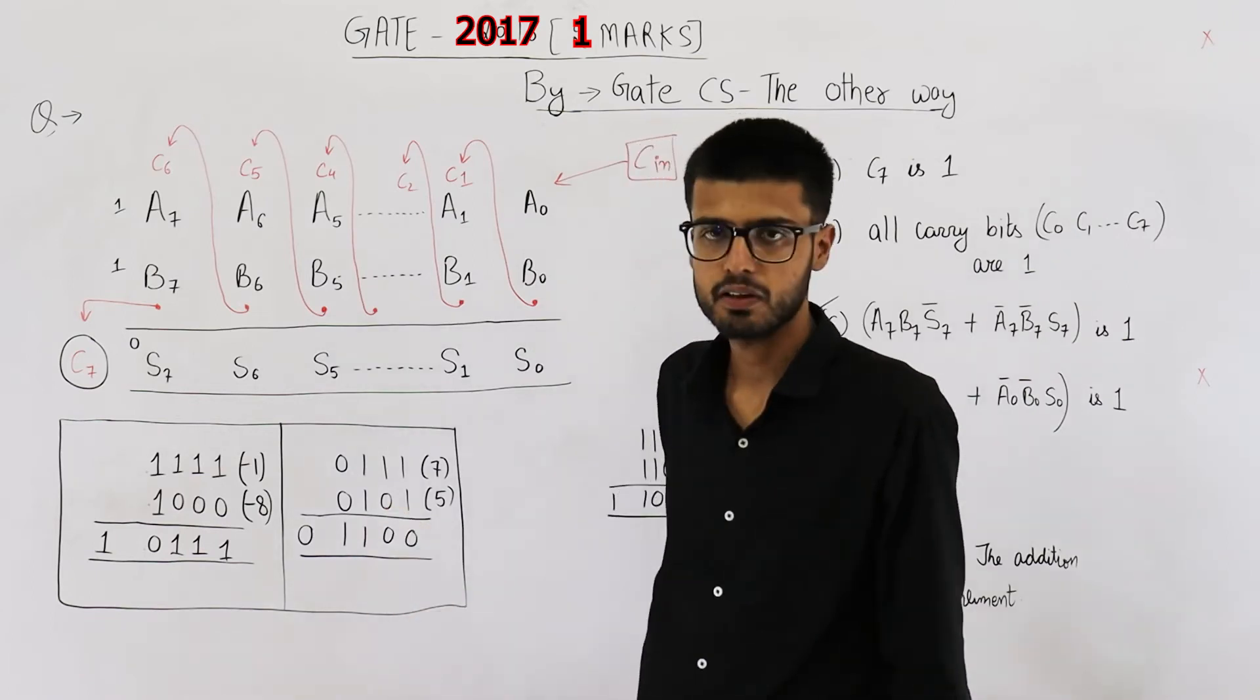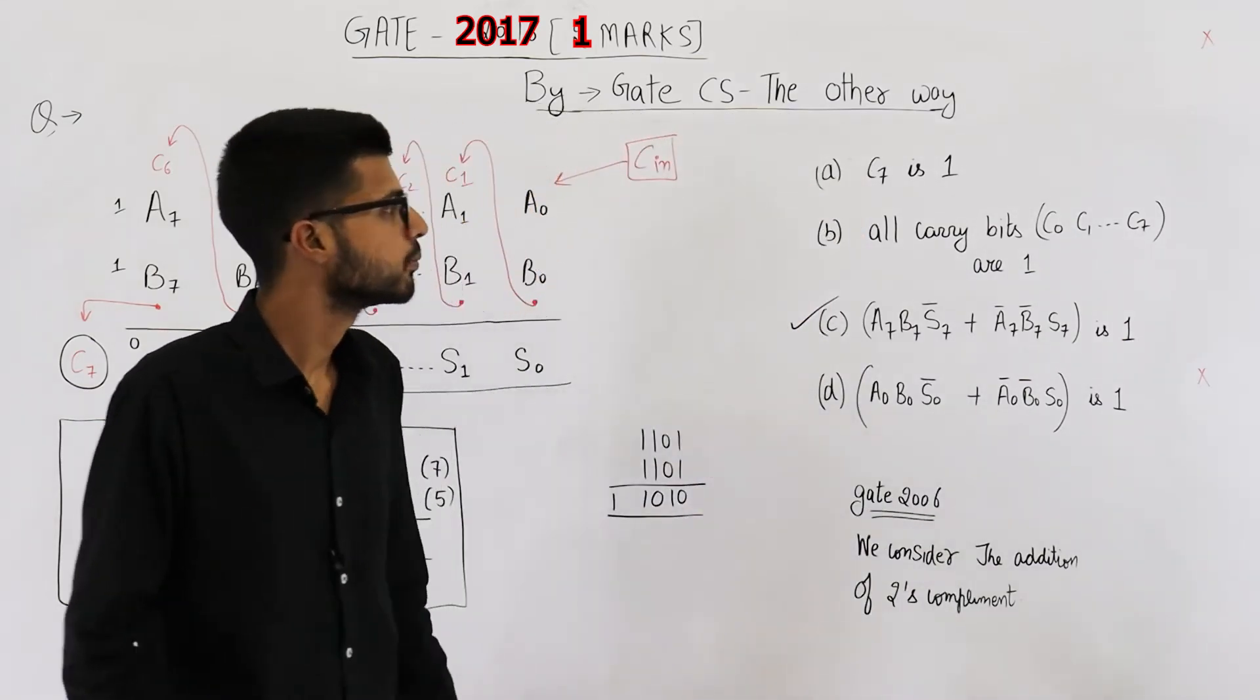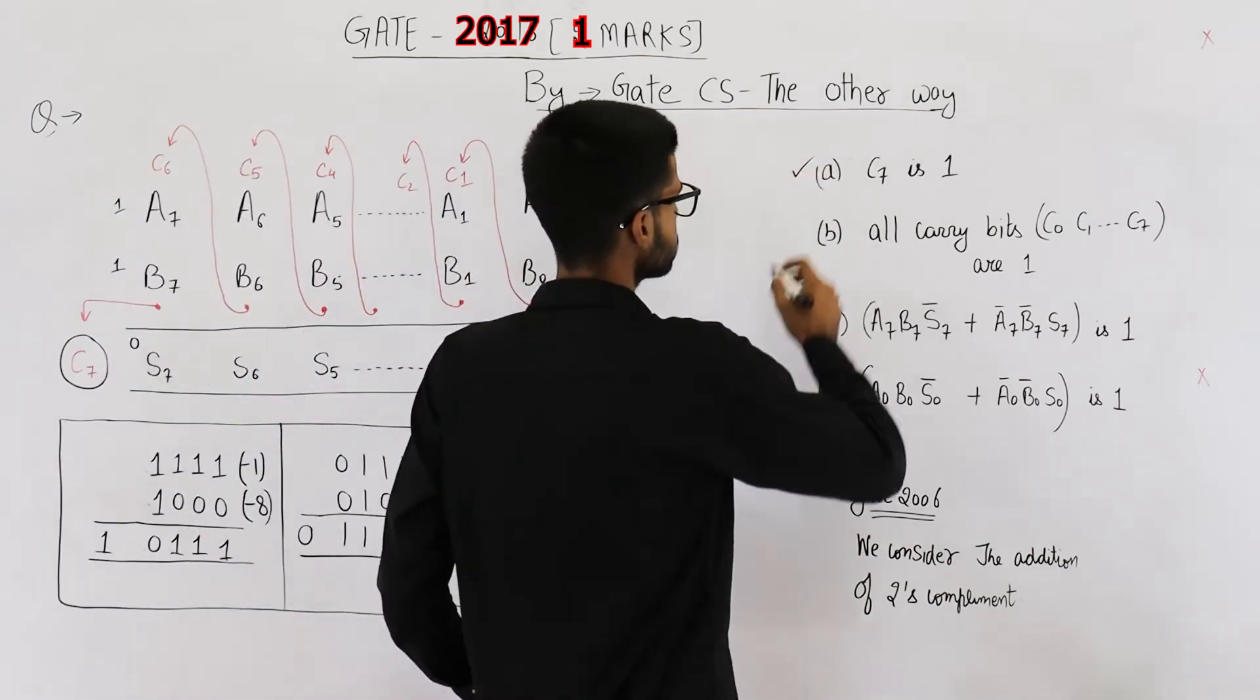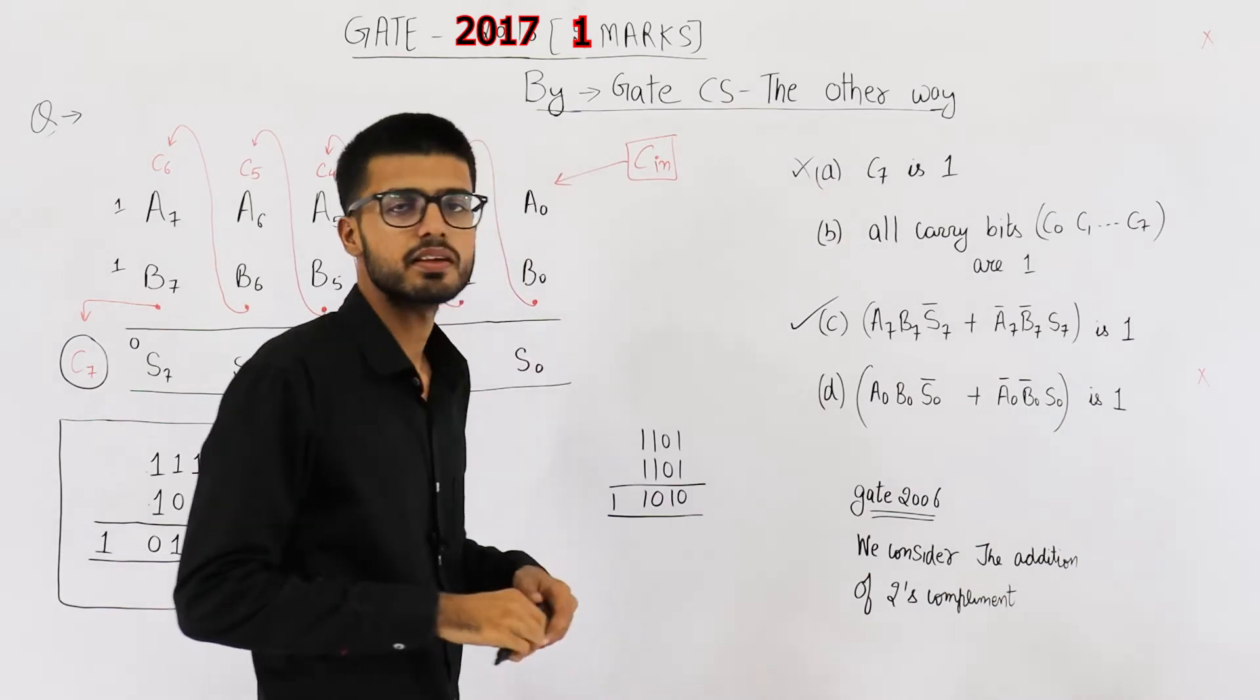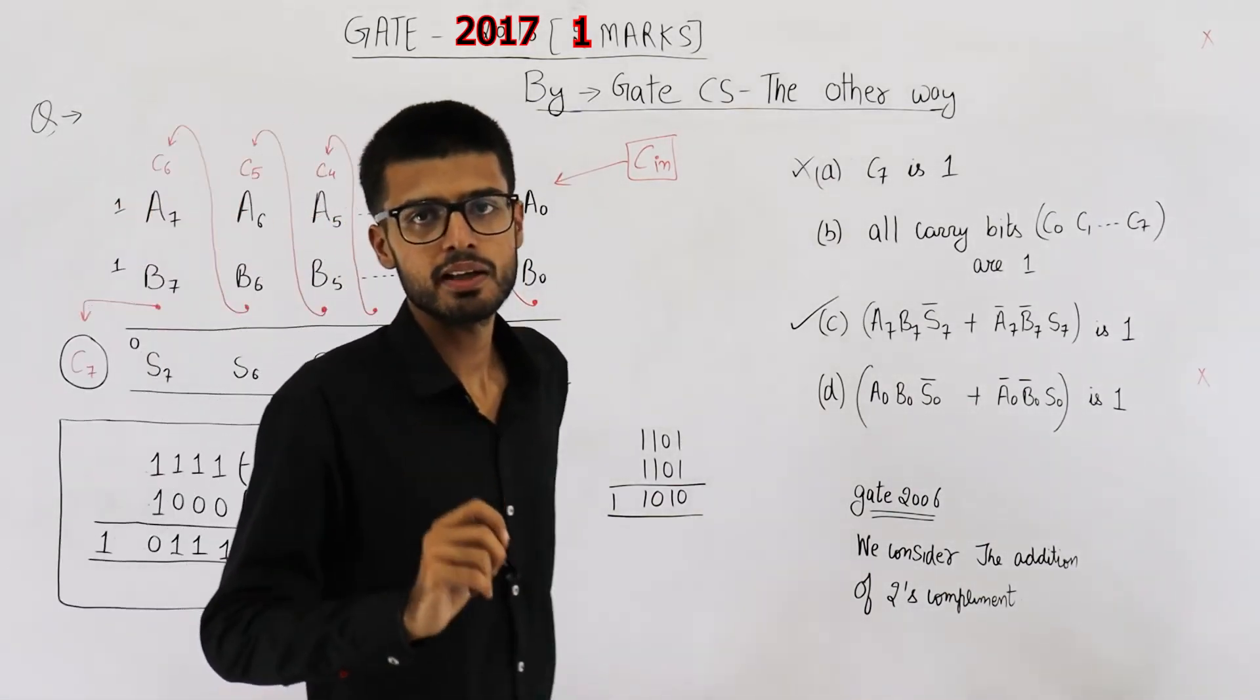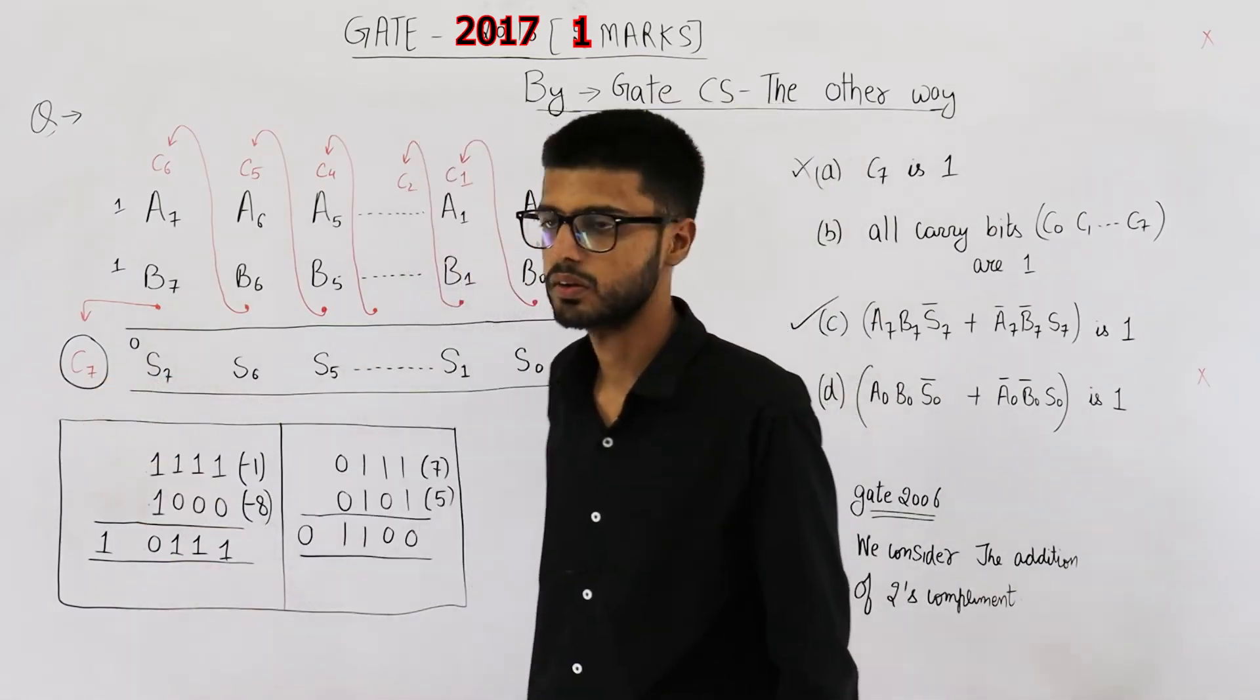Similarly, you can have a look at this example. Now your answer is option C, but some of the students think that answer is option A. This is actually incorrect. A can never be your answer because in case of signed numbers, you can get an overflow without having the carryout as 1.